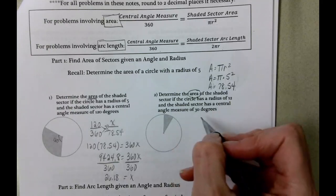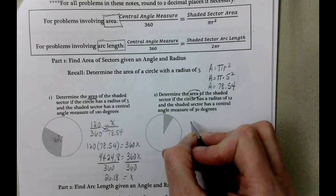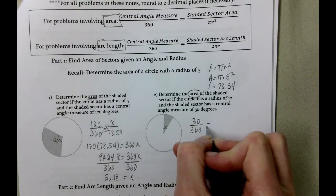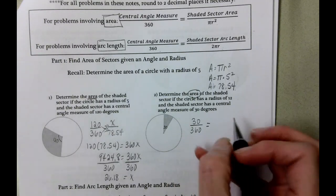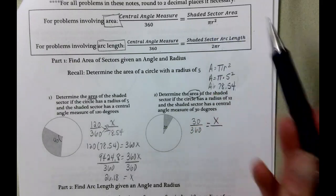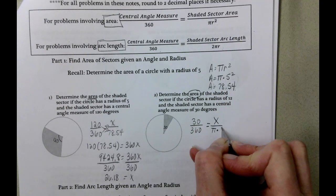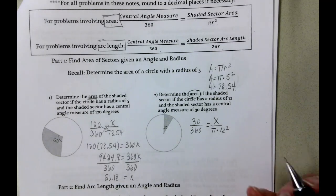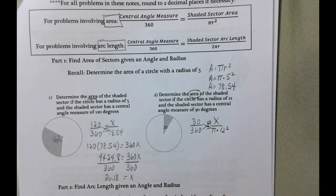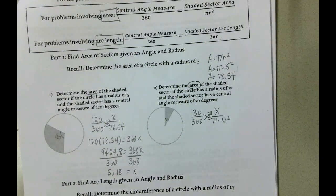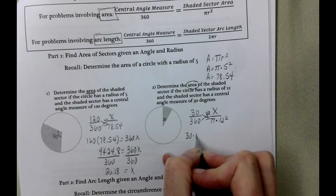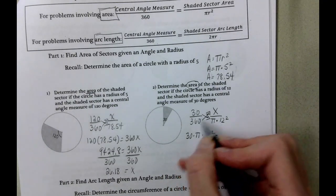And we can just set this up here. So central angle measure, which is 30, 30 over 360. We want to find the shaded sector area, so I'll call that x. And in the denominator, at the bottom of the fraction, we're going to do π times 12 squared. So what's going to happen here is we're going to cross multiply. This is going to be 30 times π times 12 squared equals 360 times x.